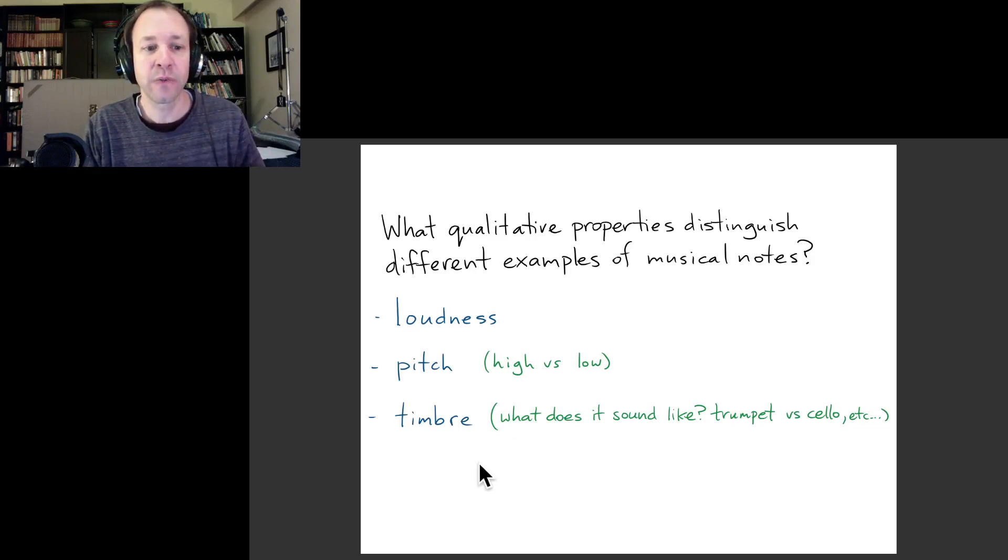Another one would be what we call the timbre. This is the most complex quality of these three. What this means is what does the note sound like? The timbre is what distinguishes the sound of a trumpet from the sound of a cello or a saxophone. If those are all playing the same note at about the same loudness level, then the thing that is different about them is what we call the timbre. Those are the main examples of the qualitative properties that would distinguish different musical notes.